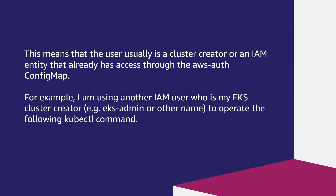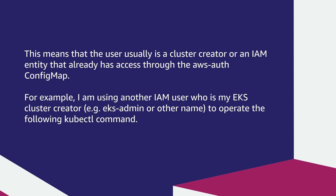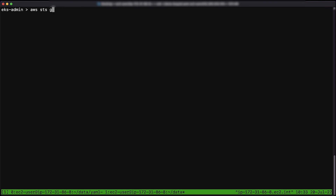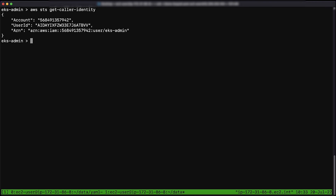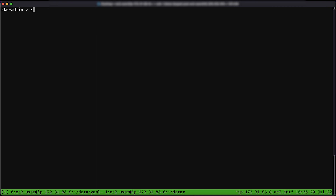This means the user is usually the cluster creator, or an IAM identity that already has access to the aws-auth ConfigMap. In this example, I'm using another IAM user who is my EKS cluster creator — for example, eks-admin — to run the following kubectl commands. Because we are running an example to define our new IAM role, eks-testing-role, to only allow access to resources under a specific Kubernetes namespace, we will create a new Kubernetes namespace and define the Kubernetes RBAC role. Let's create the namespace first.